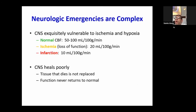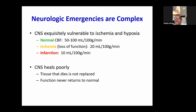This is most important for our doctors, medical students, and junior doctors particularly. Why are neurological emergencies complex? The CNS is exclusively vulnerable to ischemia and hypoxia. Normal cerebral blood flow is 50 to 100 ml per 100 gram per minute. In ischemia, it reduces to 20 ml per 100 gram per minute, and at infarction the tissue is damaged at 10 ml per 100 gram per minute. Most importantly, CNS heals poorly — tissue that dies is not replaced and function never returns to normal.